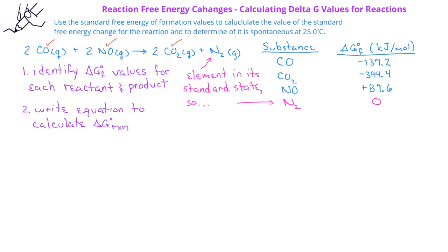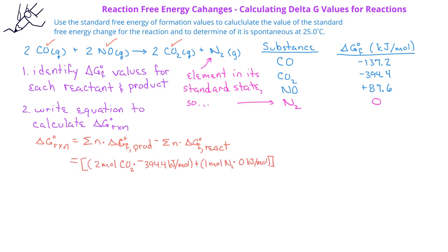We can then write out the equation and begin plugging in the values that we know. The free energy change for the reaction is equal to the sum of the moles multiplied by the standard free energy of formation for the products, minus the sum of the moles multiplied by the standard free energy of formation for the reactants. For the products, we get 2 moles multiplied by −394.4 kJ/mol for CO₂, plus 1 mole for N₂ multiplied by 0.